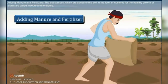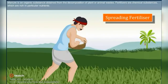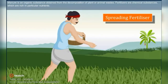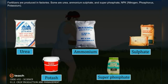Adding manure and fertilizers. The substances which are added to the soil in the form of nutrients for the healthy growth of plants are called manure and fertilizers. Manure is an organic substance obtained from the decomposition of plant or animal wastes. Fertilizers are chemical substances rich in particular nutrients, produced in factories. Some examples are urea, ammonium sulfate, superphosphate, and NPK — nitrogen, phosphorus, and potassium.